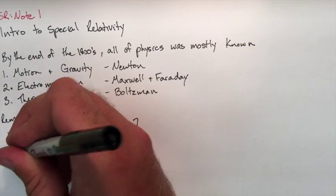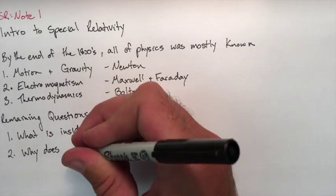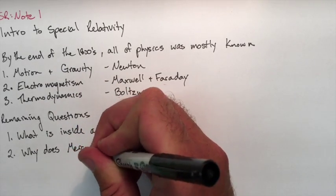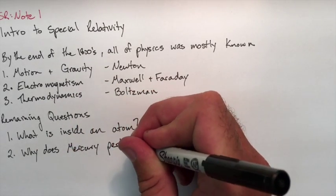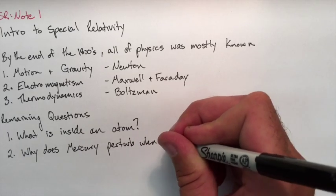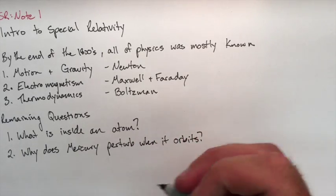Newton's laws of gravity couldn't explain what was going on, so a new theory was needed. These were the two big remaining questions in physics. Two new theories would have to be created to explain them.